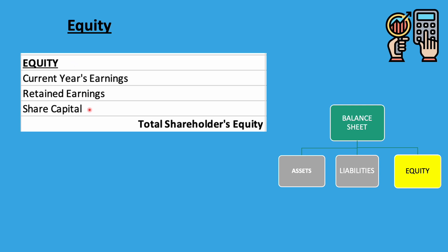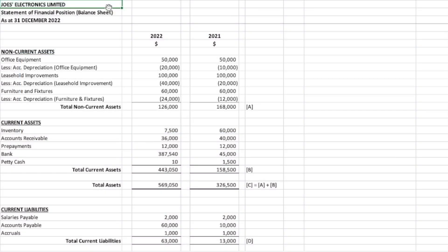Here we see the last part of the balance sheet, which is equity. Under equity, we have share capital, also called paid-up capital — the amount of capital injected by the owners or shareholders in exchange for the company's shares. We have retained earnings, which is the accumulated earnings or loss from previous years since incorporation. We also have the current year's earnings or loss, which is closed off and transferred from the income statement's net income or loss for the current year to the equity section.